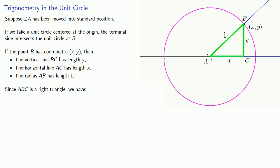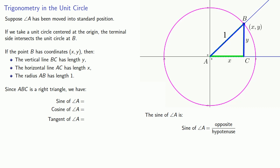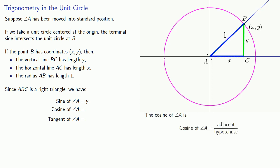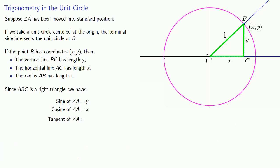Now since ABC is a right triangle, we can talk about the sine, cosine, and tangent of angle A. The sine of A is the opposite over the hypotenuse — that opposite side has length y, and the hypotenuse has length 1, so sine is y over 1, or just y. Similarly, the cosine is adjacent over hypotenuse, which is x over 1, or just x. And finally, the tangent is opposite over adjacent, which is y over x.